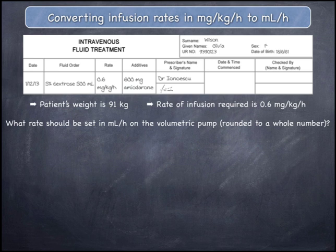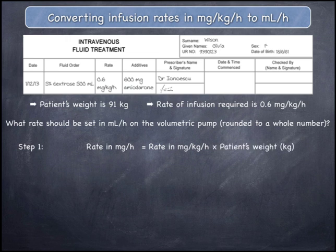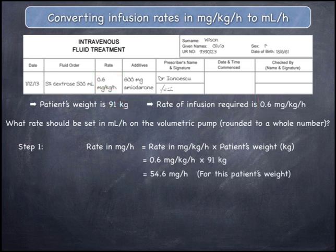This calculation should be undertaken in a series of steps in order to simplify it. Step 1: First, change the rate in milligrams per kilogram per hour to a rate in milligrams per hour. This can be done by multiplying the rate in milligrams per kilogram per hour by the patient's weight: 0.6 milligrams per kilogram per hour multiplied by 91 kilograms equals 54.6 milligrams per hour. This means that this 91 kilogram patient will be receiving 54.6 milligrams of amiodarone every one hour.